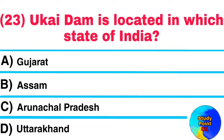Question No. 23. Okai Dam is located in which state of India? Answer: Gujarat.